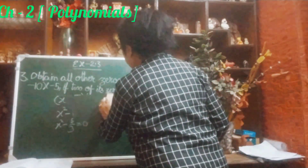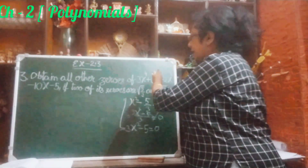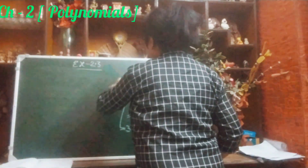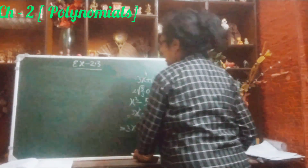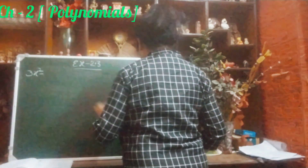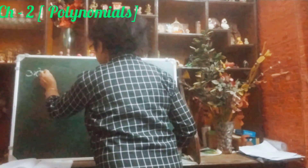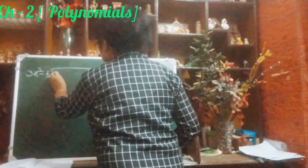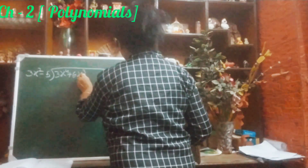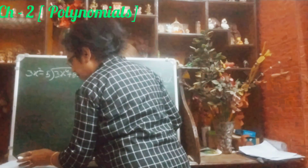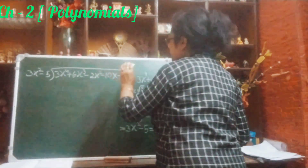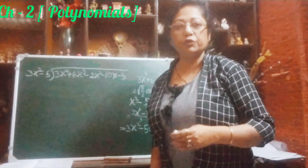Now we have to find out the other two zeros. For this, we will divide the given polynomial by this factor. So let us start that division — all of you can do this. If you have any doubt, please ask me in the comment box and I will clear your doubt. I am dividing 3x² - 5 as the divisor, and the polynomial is 3x⁴ + 6x³ - 2x² - 10x - 5. We have to divide it and find out the quotient.